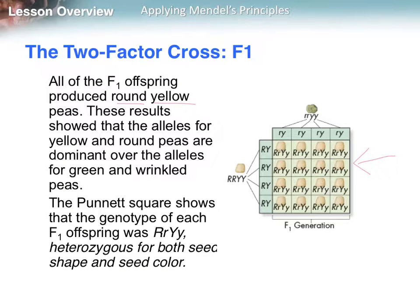The Punnett square shows that the genotype of each offspring was a mixture of the two parents. Each one was big R, little r, big Y, little y — meaning they were heterozygous for both seed shape and seed color.